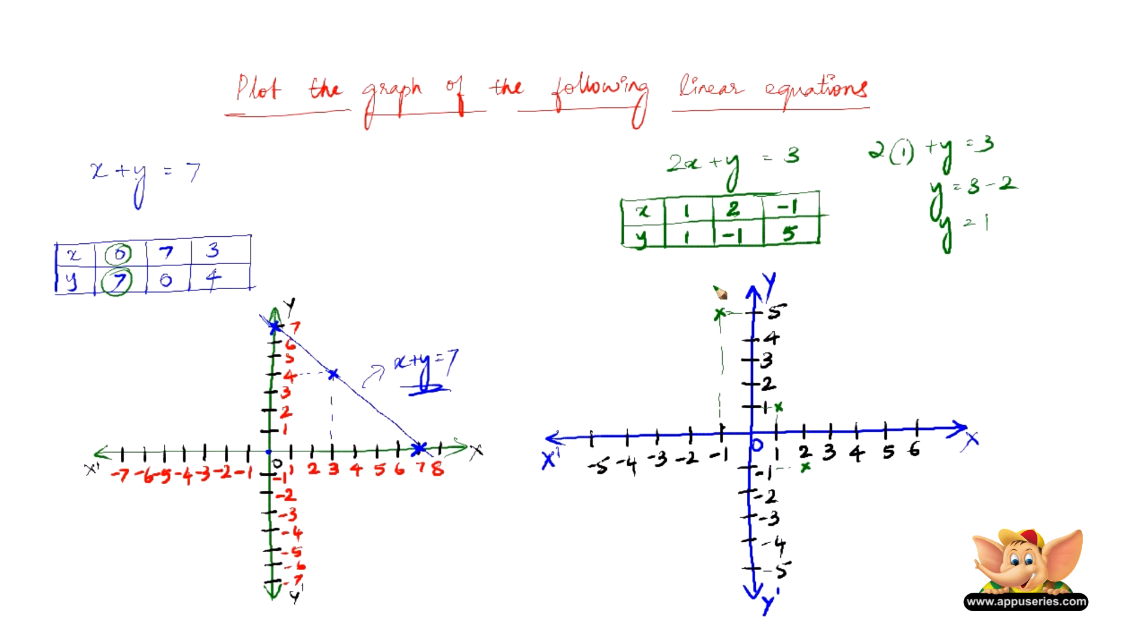So now all we have to do is join this and we get a straight line. This is the straight line representing the equation 2x plus y equals 3.